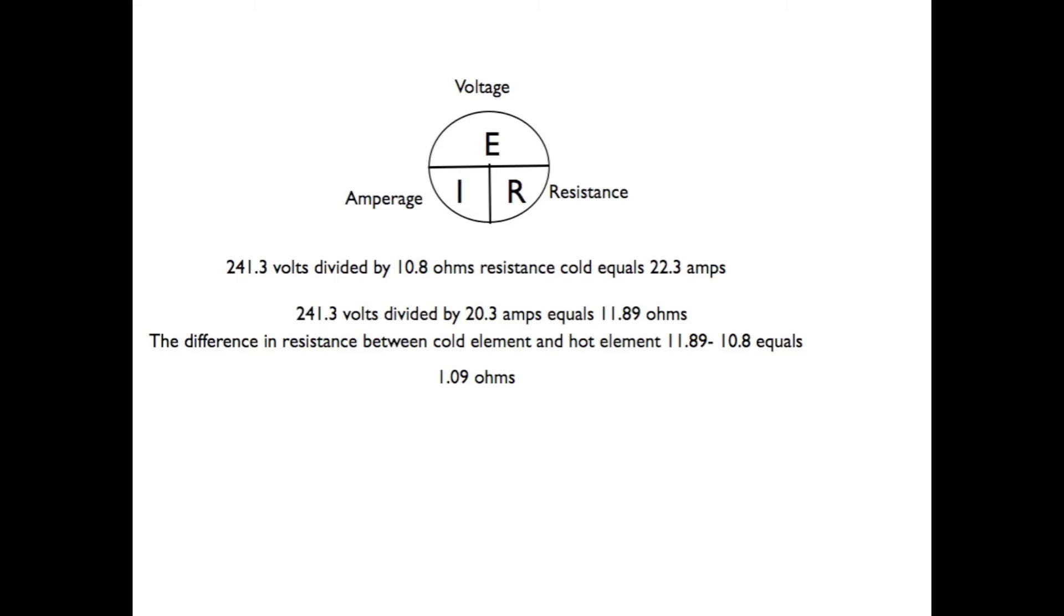Then we take the readings we actually got: 241.3 on the voltage again, and we had 20.3 amps. If we do the EIR calculation, we end up with the calculated ohms of 11.89. So the difference in resistance between a cold element and a hot element is 11.89 ohms minus 10.8 ohms, and it equals 1.09 ohms.